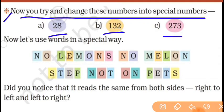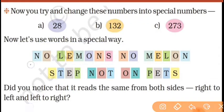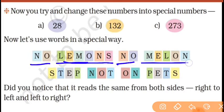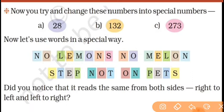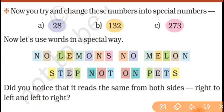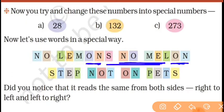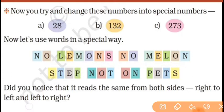Now some words also — let's use words in a special way. Kuch words hain jaise: no lemons, no melon. Aap dekho — yeh left to right hai: 'no lemons no melon'. Lekin isko ulta padho — 'no lemons no melon' — kitna mazedaar hai na! Left-right, forward-backward, same to same.